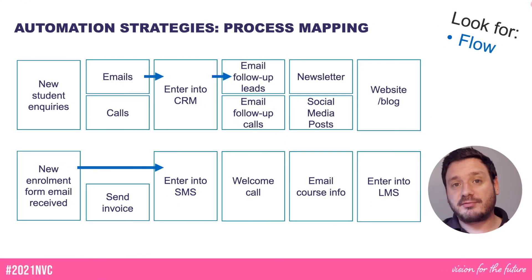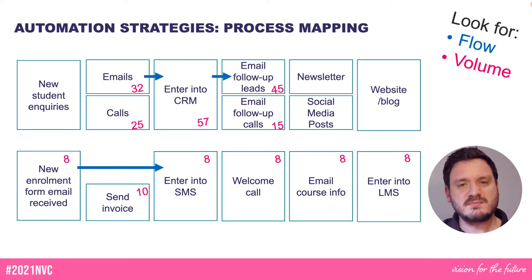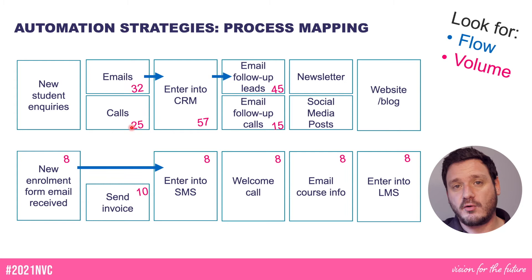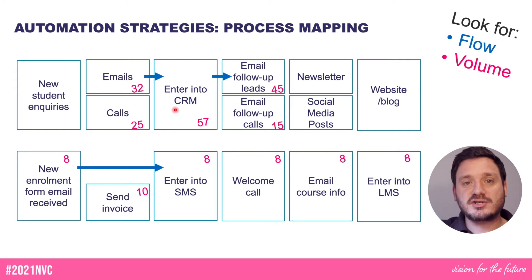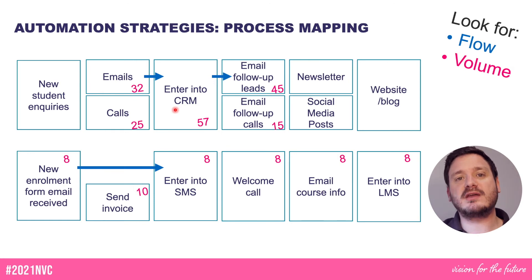Remember from the Three V's, we want to look for volume. So try to find areas of high volume. For example, in this particular one we're getting 25 calls a day but there's no connection to enter them into the system — so that's something that's manually being done. Is there a part of that that we can automate?